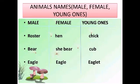Next we have rooster — female: hen, young: chick. Next is bear — young: cub. Next is eagle — young: eaglet.